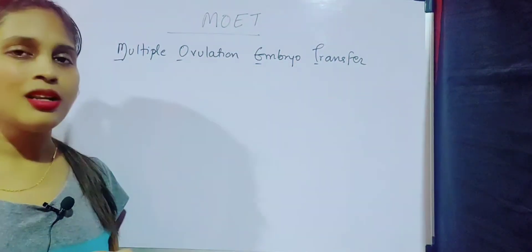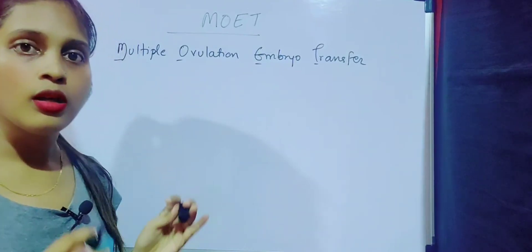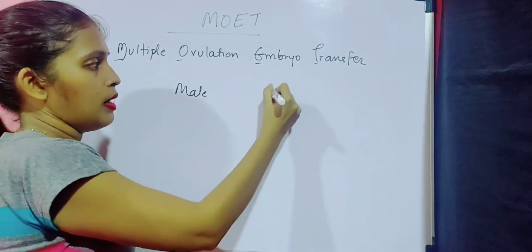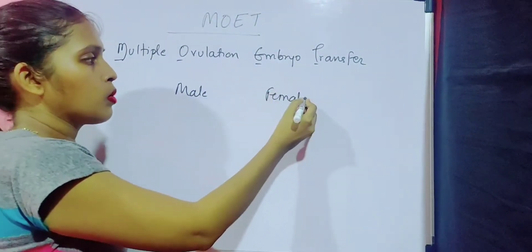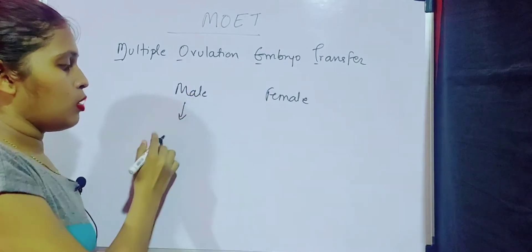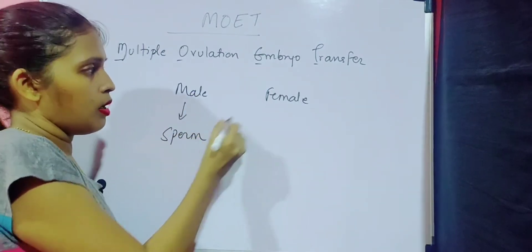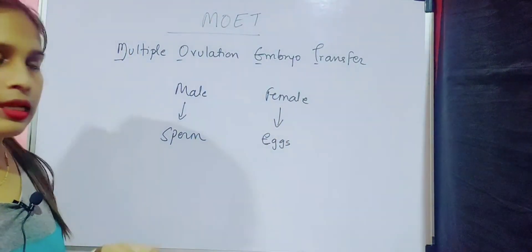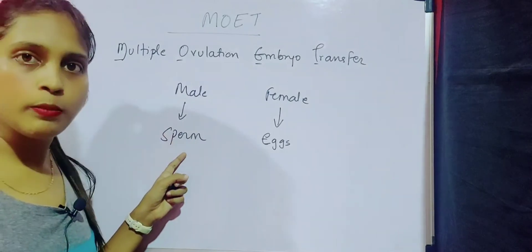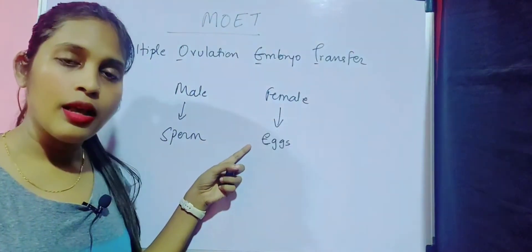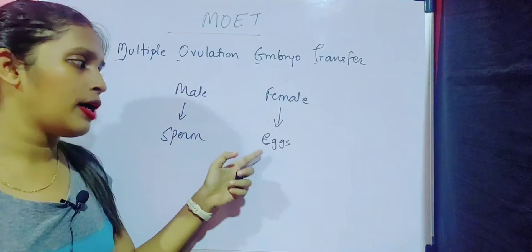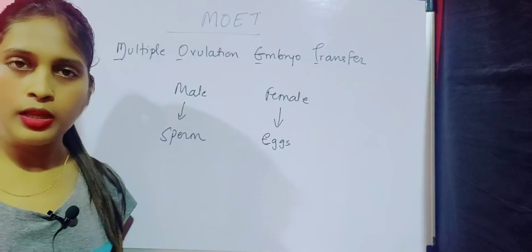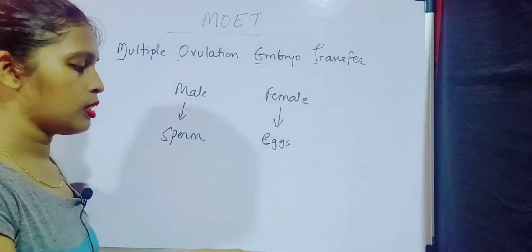Let us start with a quick basic idea about the male and female. The reproductive part of the male is the sperm and for the female it is the eggs. The male gives the sperm and the female gives the eggs, and then the fusion of the sperm and the egg takes place to form the zygote.